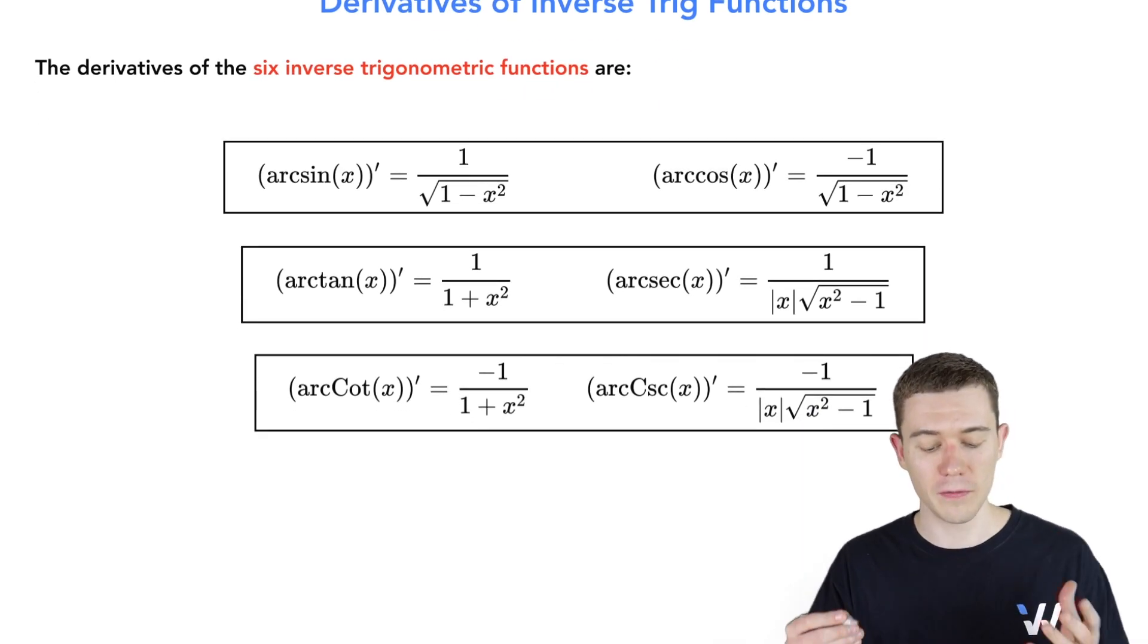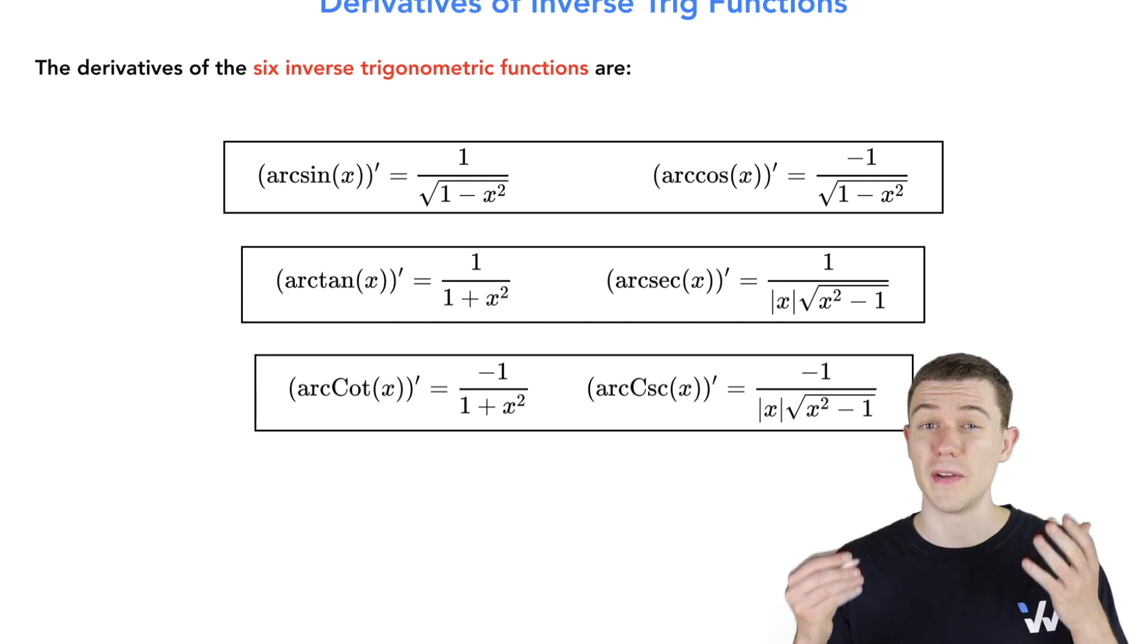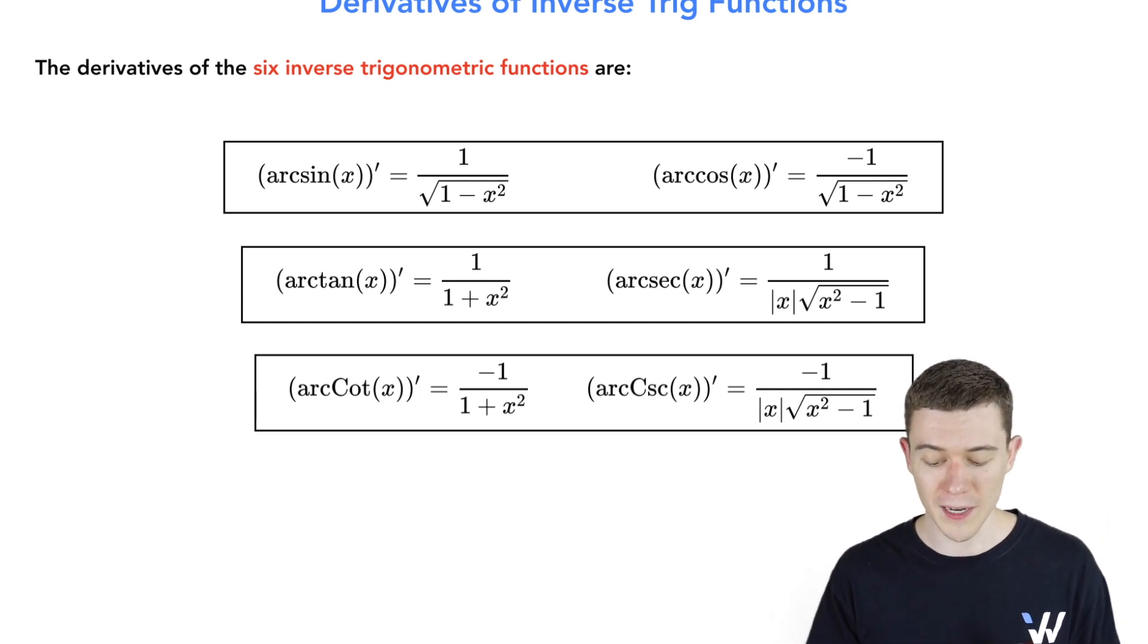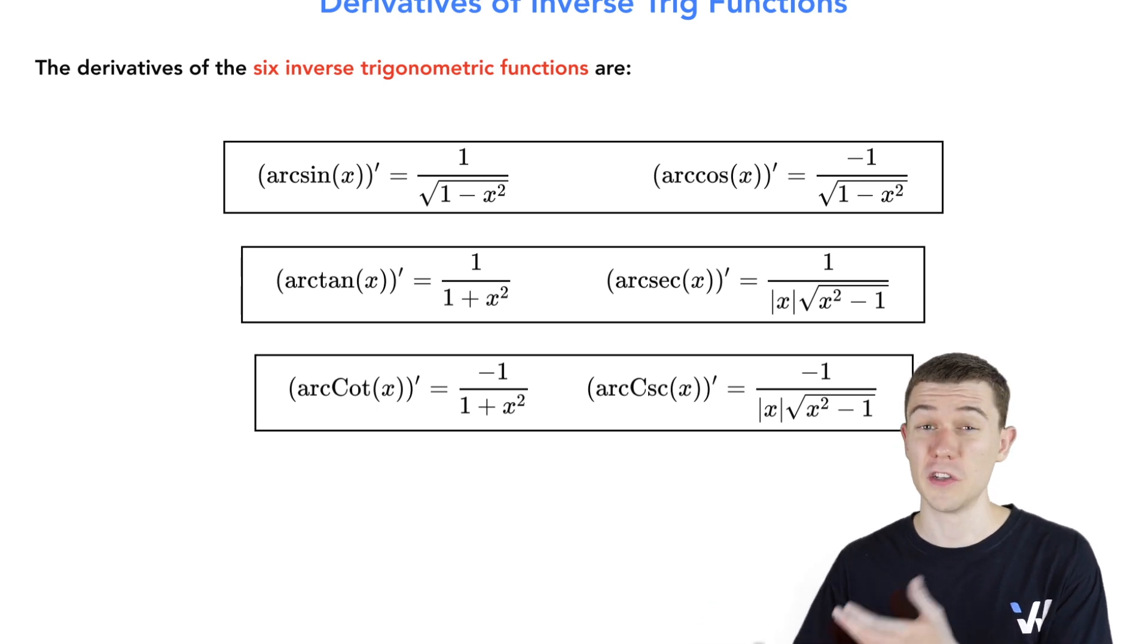Let's look at the derivative of inverse sine, also known as arc sine. It's 1 over square root of 1 minus x squared. Now, what's very nice is that the derivative of arc cosine, inverse cosine, is exactly the same thing, just with a negative out front.